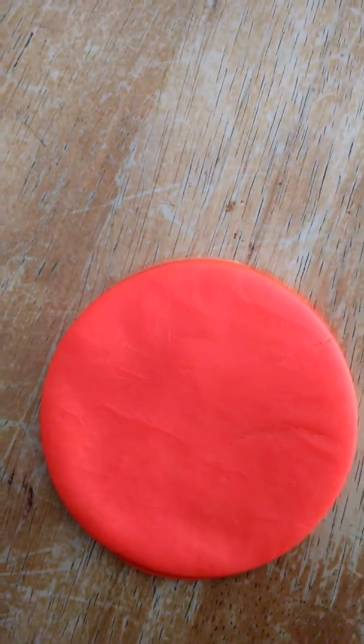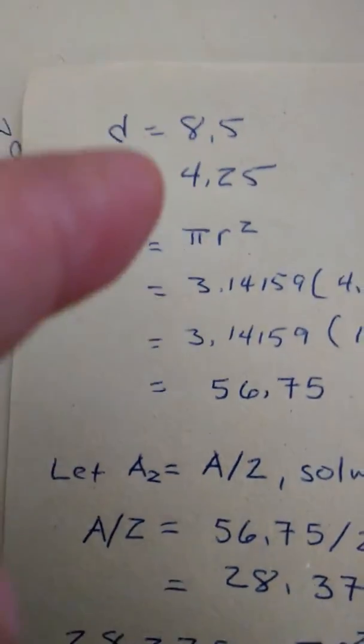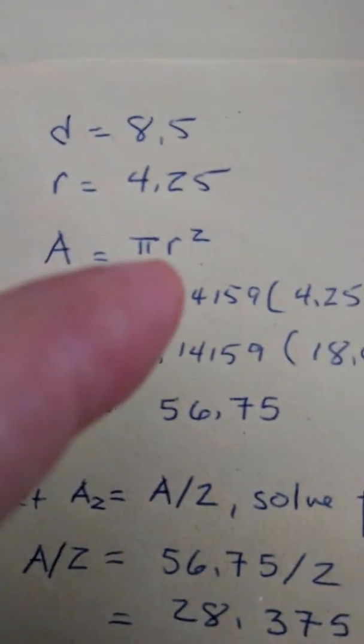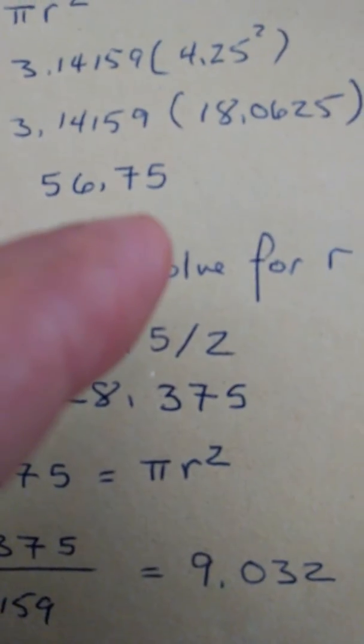Using some simple math, 8.5 centimeter diameter, we have a radius of 4.25. To solve for the area, we do the calculation. 56.75 centimeters is the area of this cake.